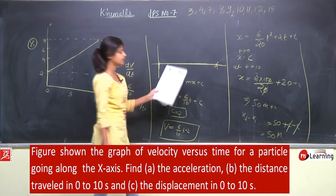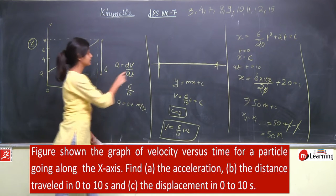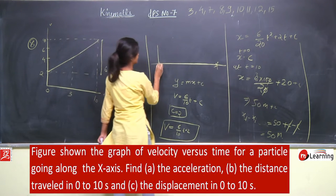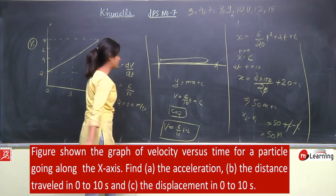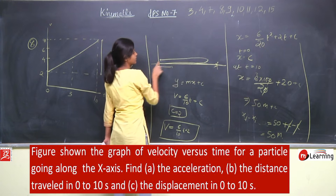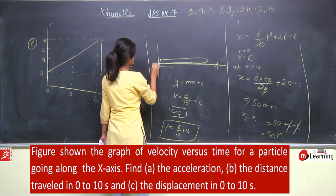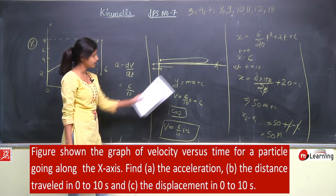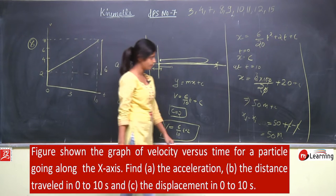Displacement भी इतना ही हो जाएगा — final minus initial. अगर बीच में कोई turning point आता, मतलब कि वह जाके कहीं से वापस आता, तो displacement और distance अलग-अलग होता — distance पूरा हो जाता, और displacement initial और final point के बीच का distance। लेकिन इस case में same direction में move कर रहा है, तो distance और displacement दोनों same हैं।